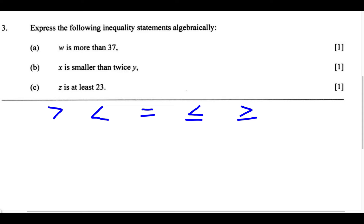Now that we have our inequality symbols, let's begin. The first part, A, says: W is more than 37. We know we're going to have a variable, which is the letter W. When we see "is more than," we should use the greater than symbol. Therefore, W is greater than 37.